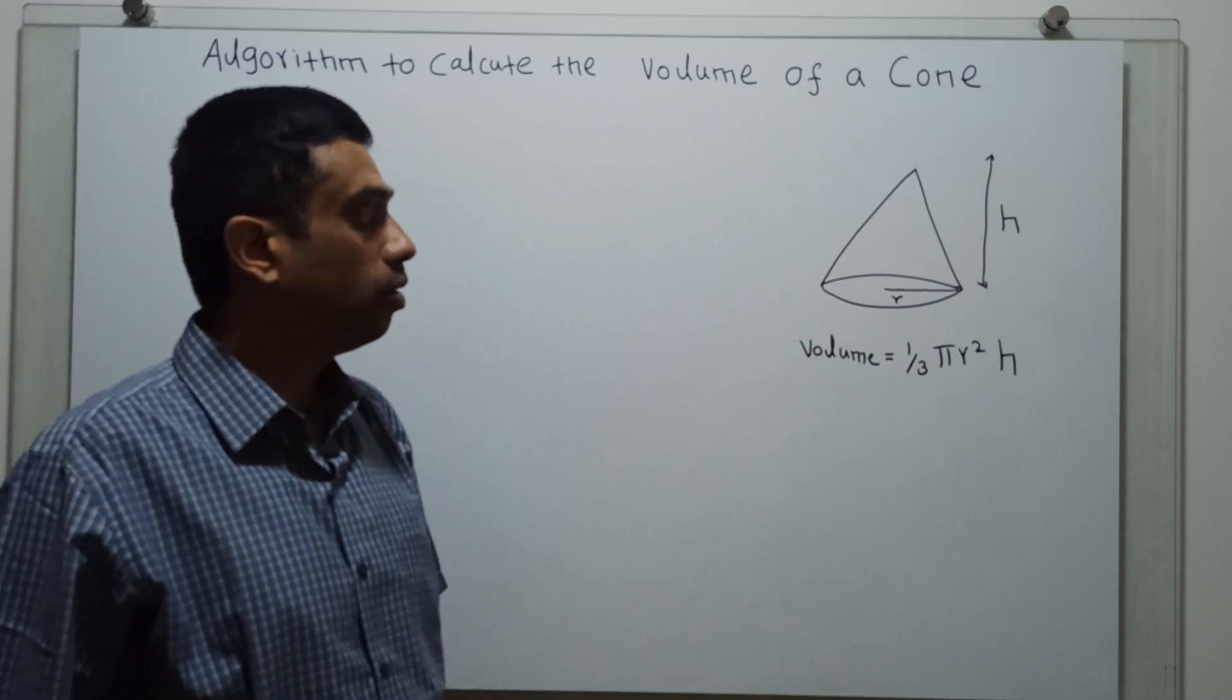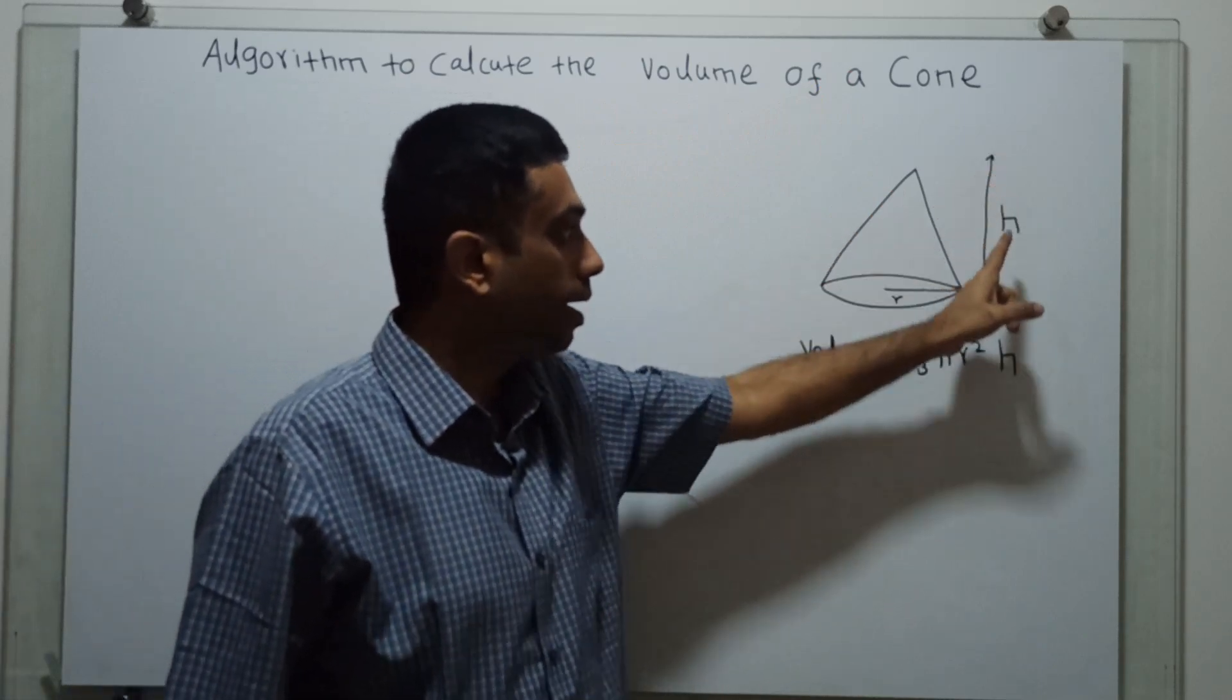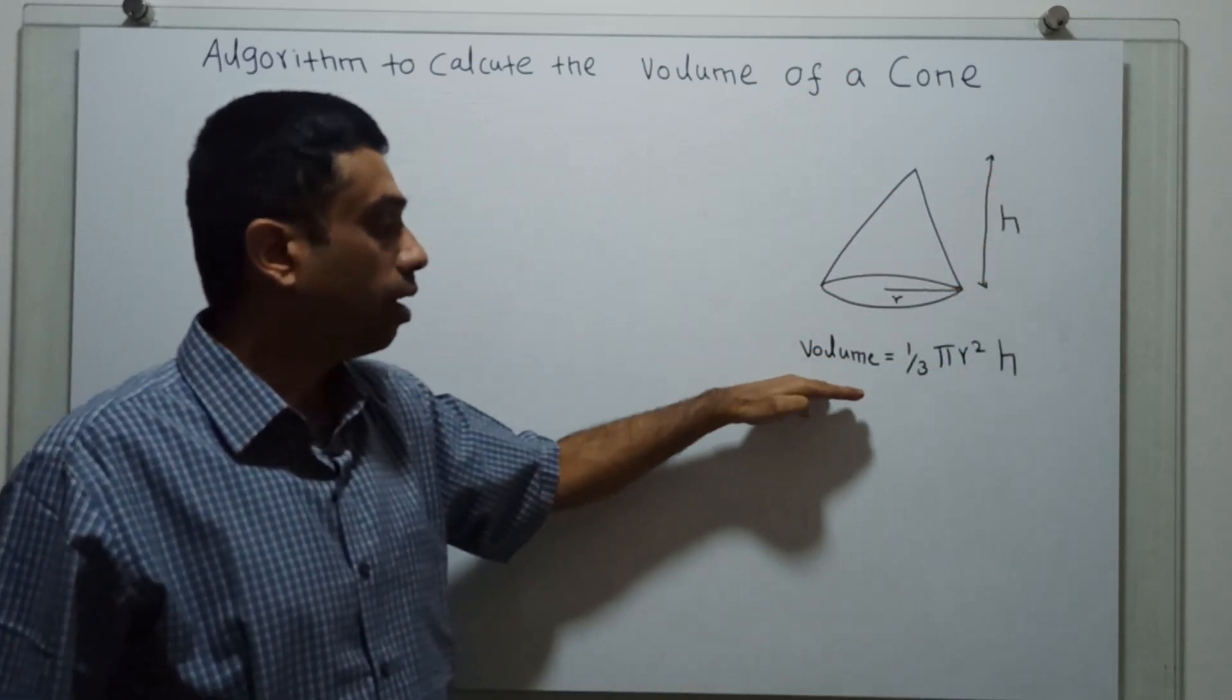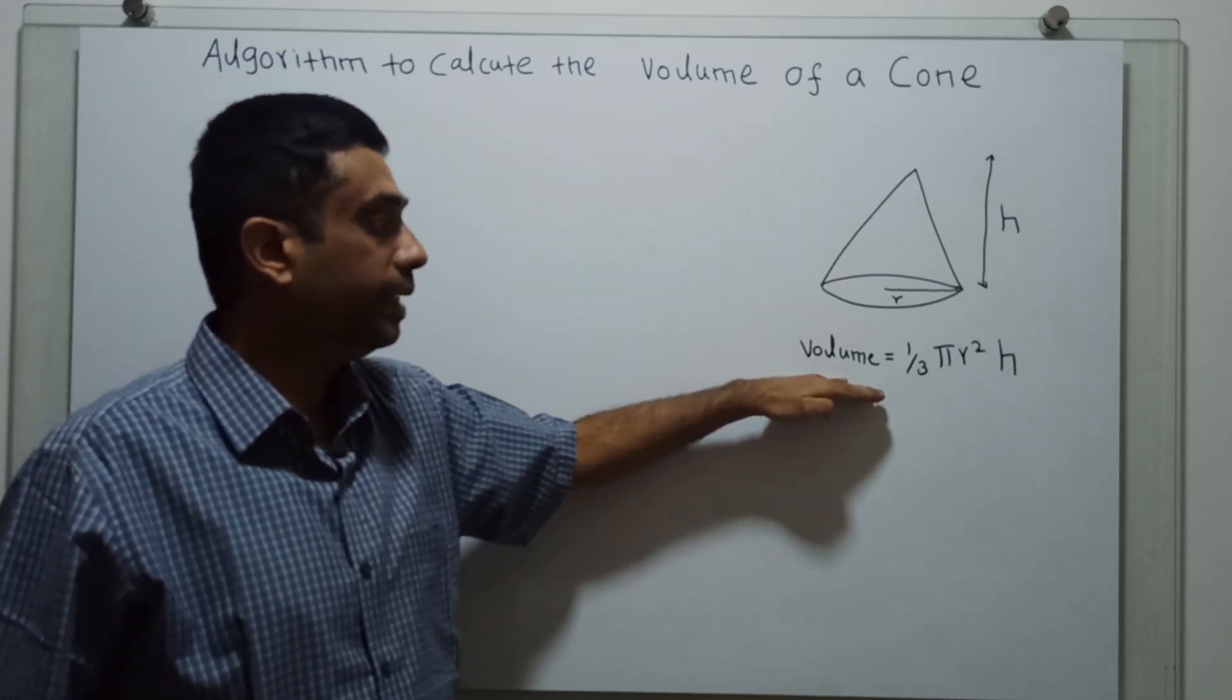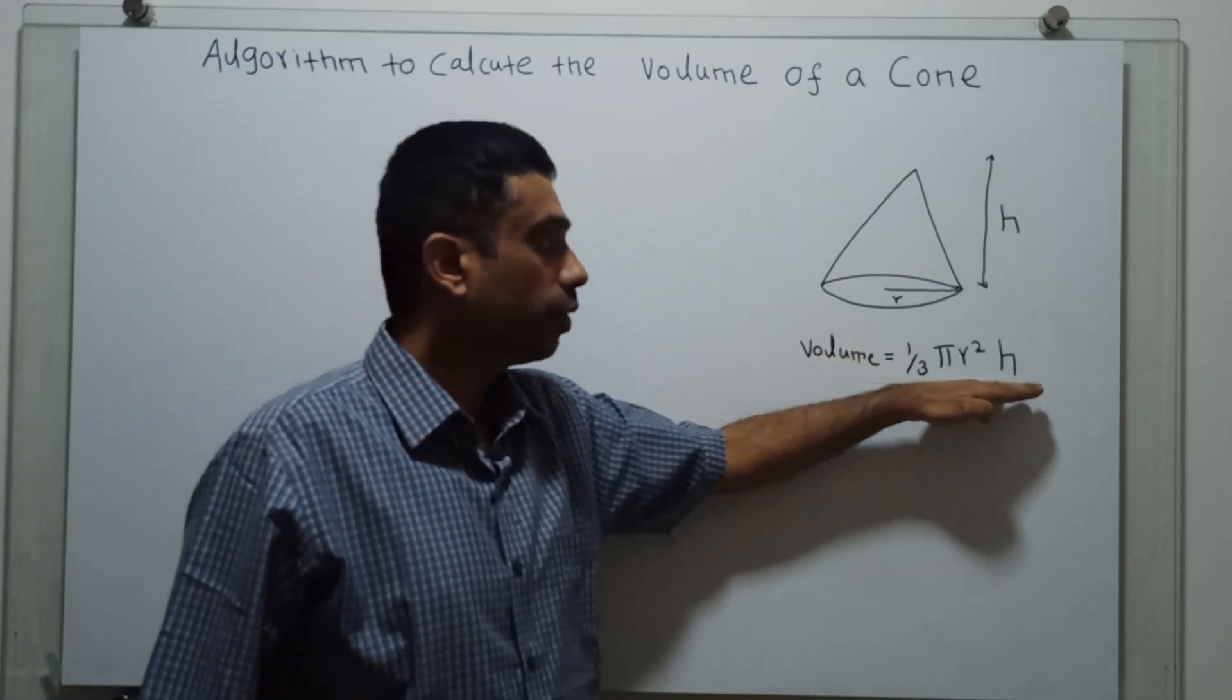So this is the cone. We have a radius and the height of the cone. The formula to calculate the volume of the cone is 1 by 3 pi r square h.